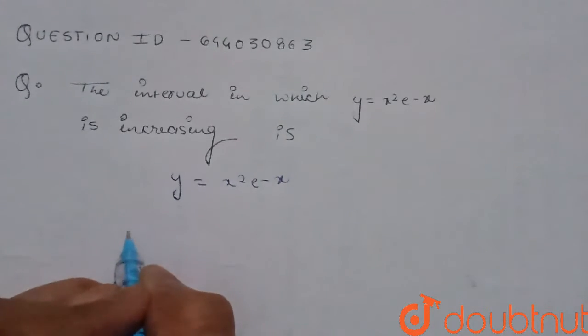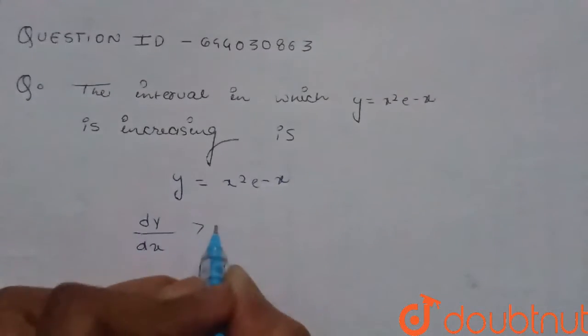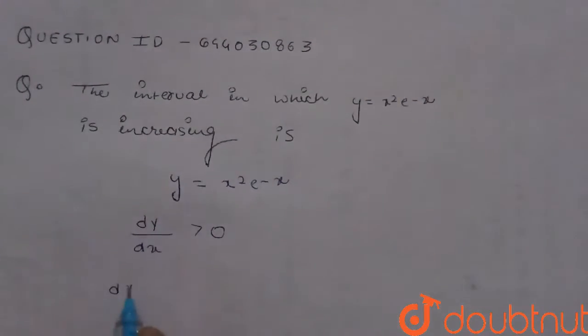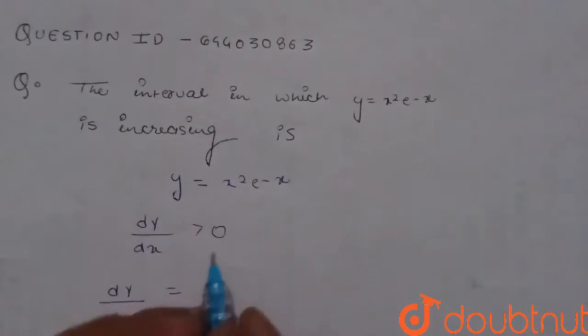If the function is strictly increasing, then dy by dx must be greater than zero. So dy by dx will be equals to, as the x squared and e raised to the power minus x are in product, we will differentiate it like: